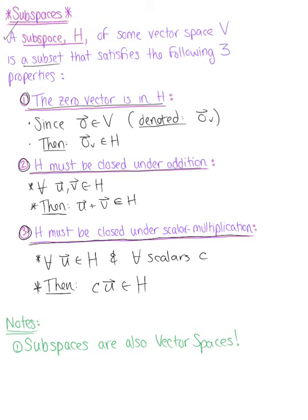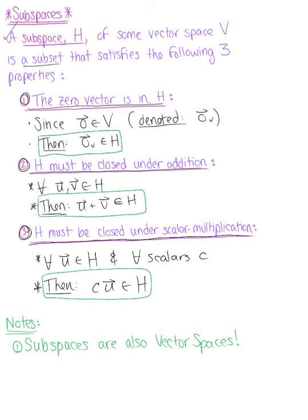So these three conditions — the zero vector being in the subspace, the subspace being closed under addition, and the subspace being closed under scalar multiplication — are what makes a subspace a subspace.